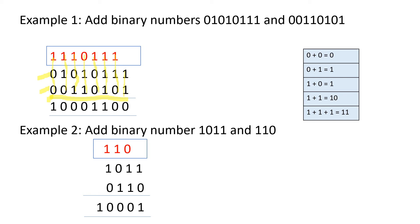Example 2: add binary numbers 1011 and 111. Since 1011 is 4 bits and 111 is 3 bits, we add a leading 0 to make it 0111. Starting from the LSB: 1+0=1 no carry; 1+1+0=10 write 0 carry 1; 0+1+1=10 write 0 carry 1; 1+0+1=10 write 0 carry 1. The result of adding 1011 and 111 is 10010.